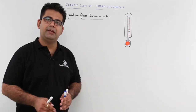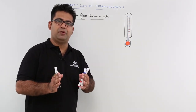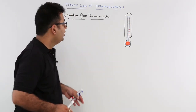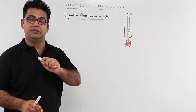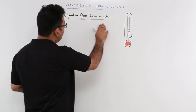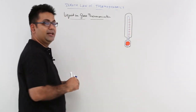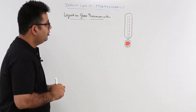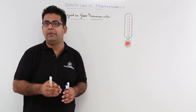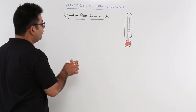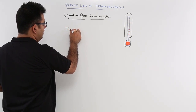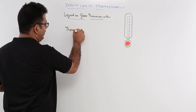After understanding the basic concept of Zeroth Law of thermodynamics and what is temperature, we move on to the types of thermometers. The very first thermometer we talk about is the liquid-in-glass thermometer. Before you understand how temperature measurement is done, you need to understand one very important term, and that is thermometric property.